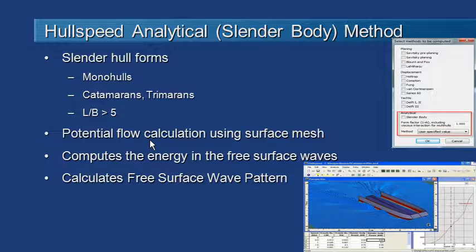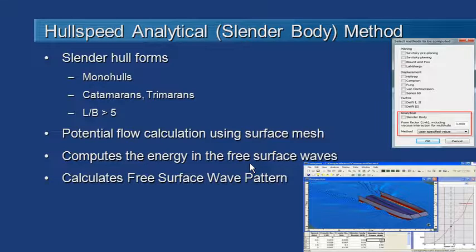The potential flow calculation uses a surface mesh that covers the hull. The method then computes the energy in the waves and the pressure field developed around that hull. A byproduct of this is that we can calculate the free surface wave pattern shown in the picture at the bottom right, as part of the slender body method.